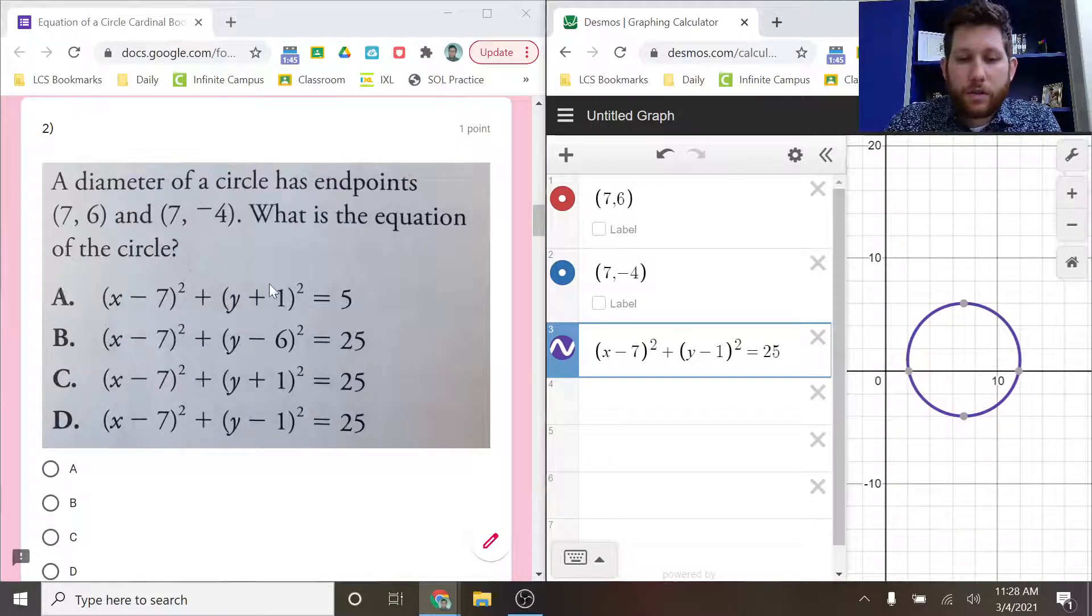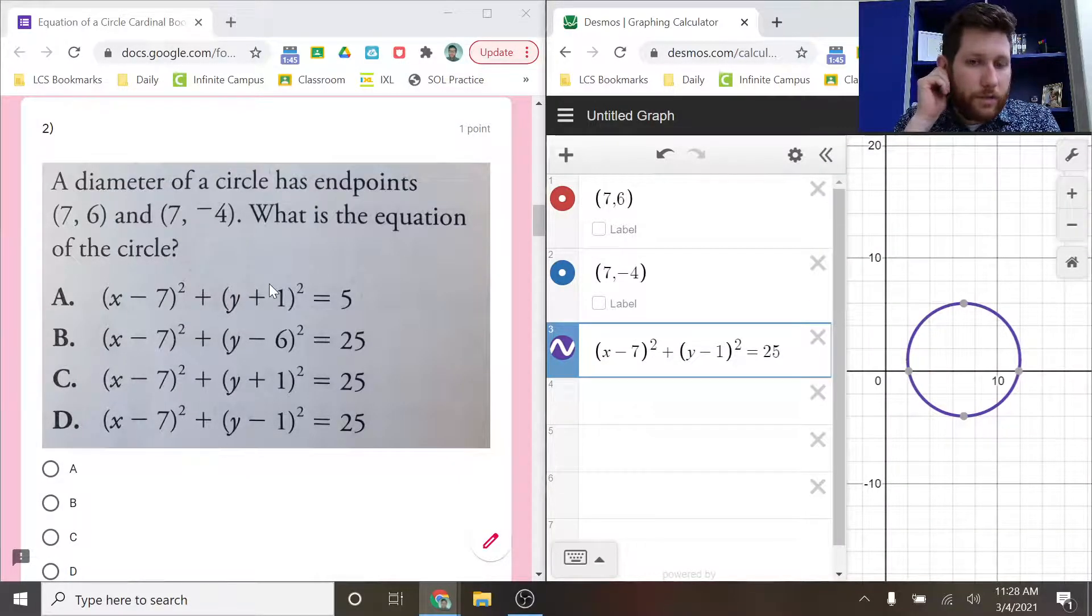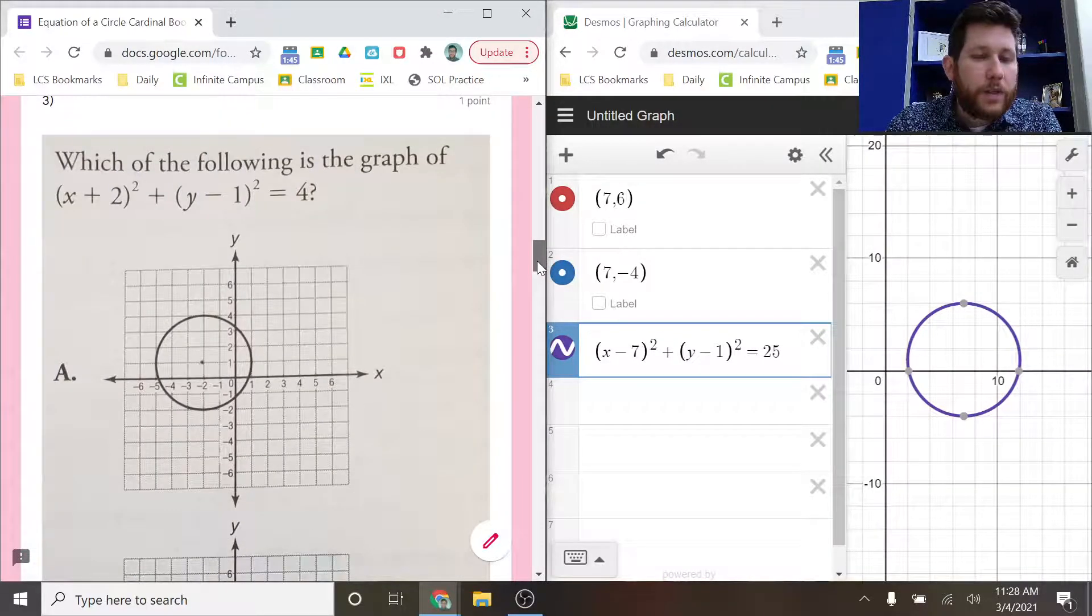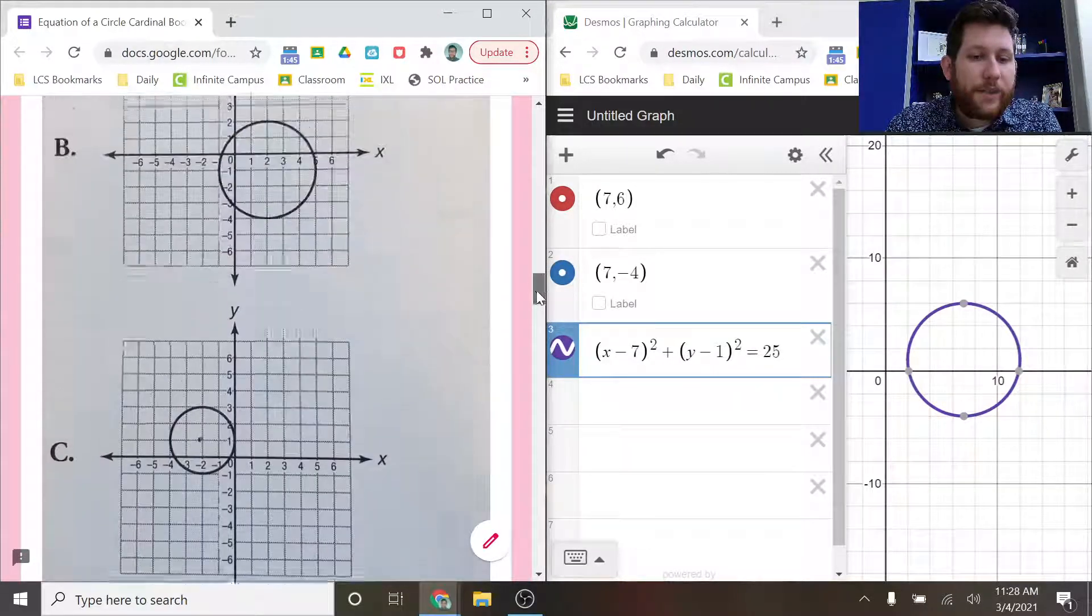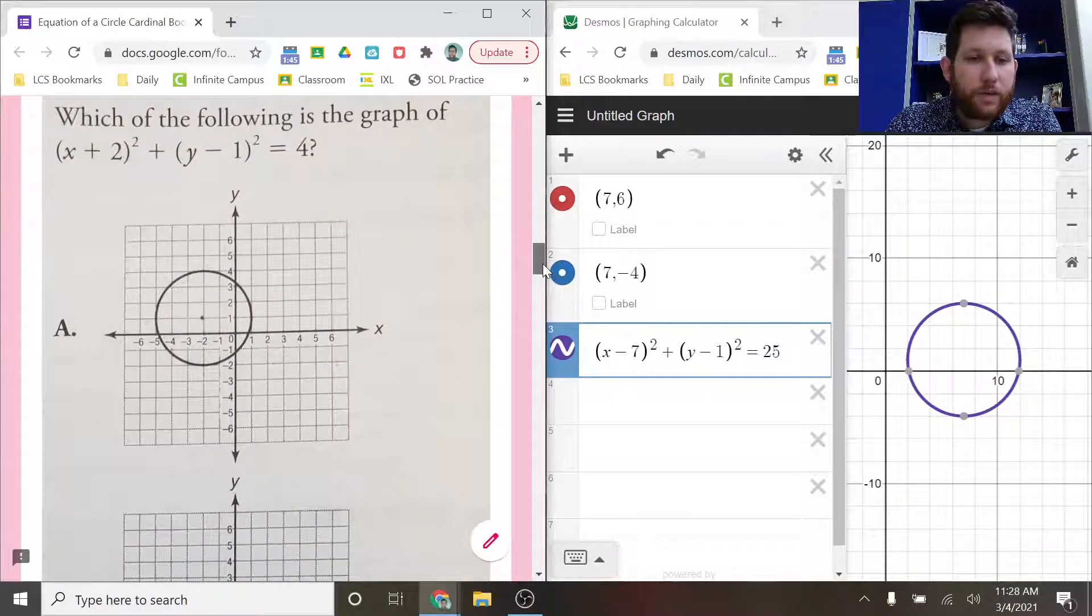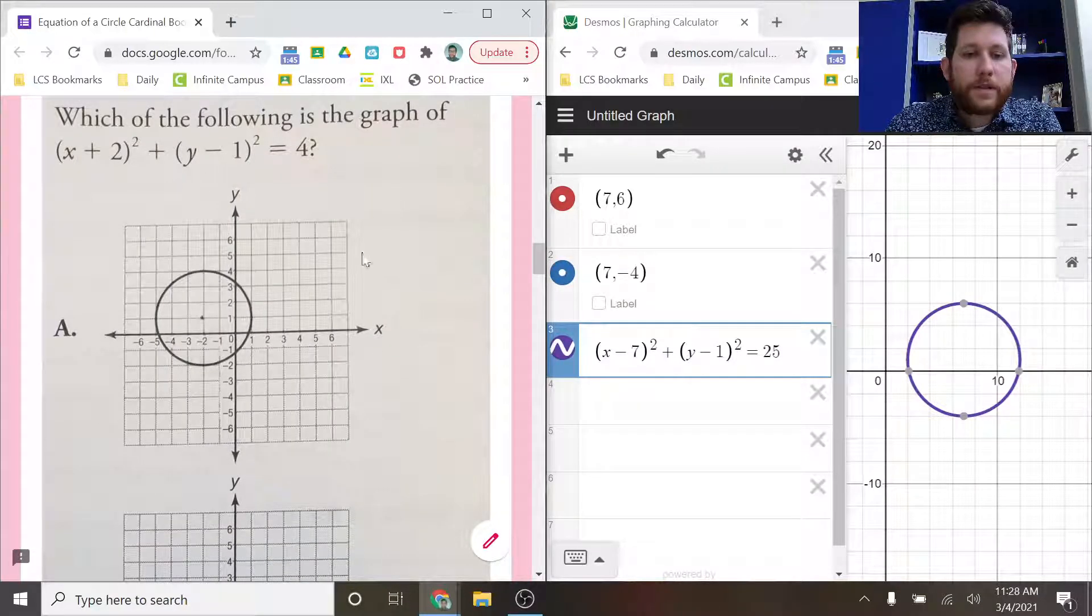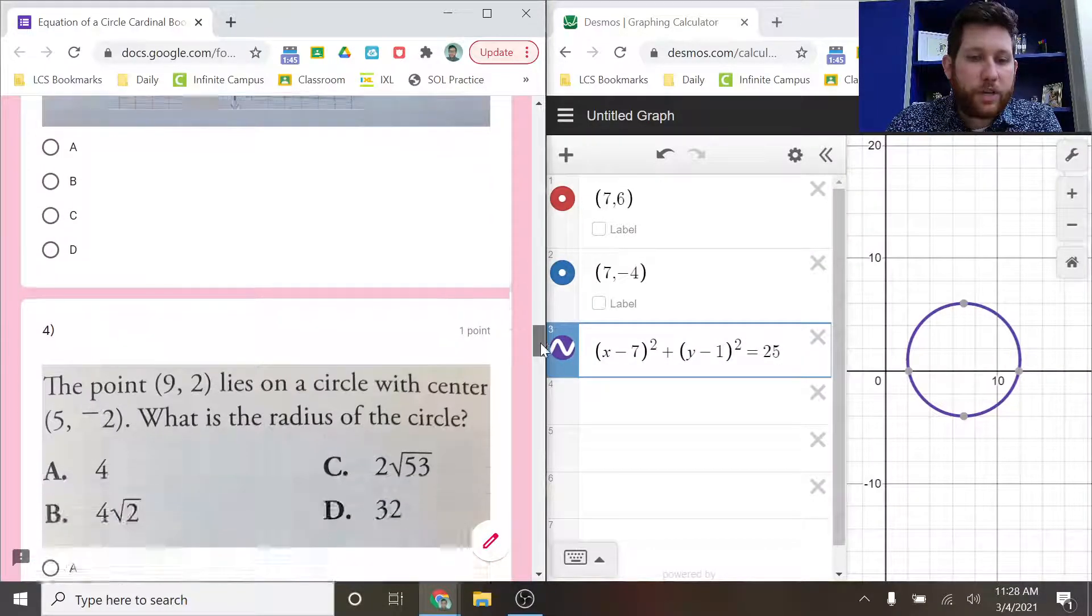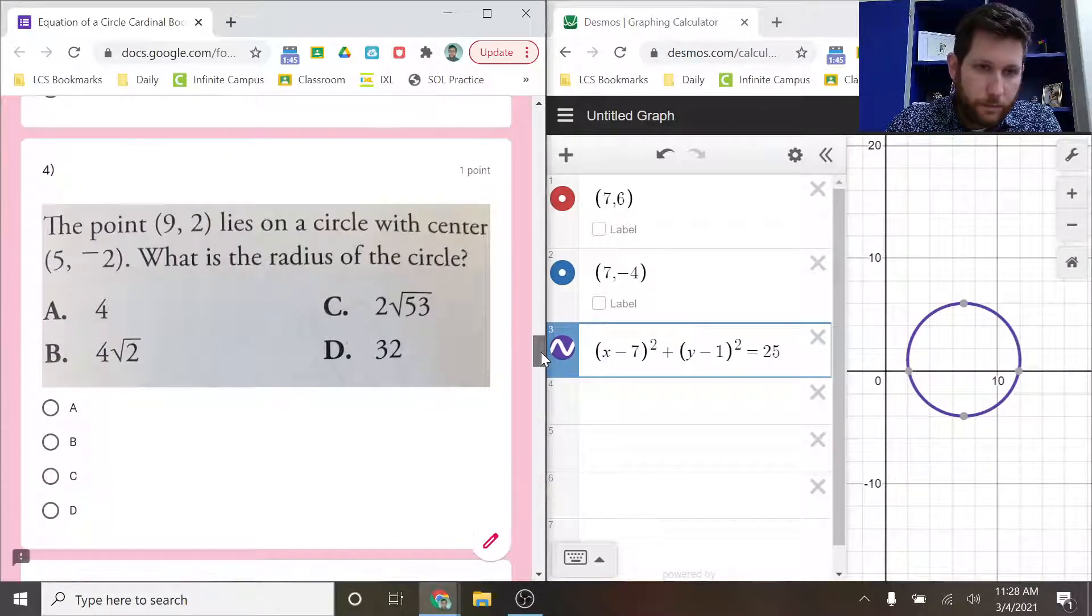So what I would encourage you to do, and we're going to talk through some different strategies on each of these, is to go through, and if you need to, graph the different circles, or graph as much of the circle as you can, and then start plugging in different values. So let me show you what I'm talking about. So this one, we're supposed to identify the graph. This is something that could show up on the SOL. You could honestly just graph this in Desmos and figure out which of these graphs seems to make sense with what picture you're seeing in Desmos.